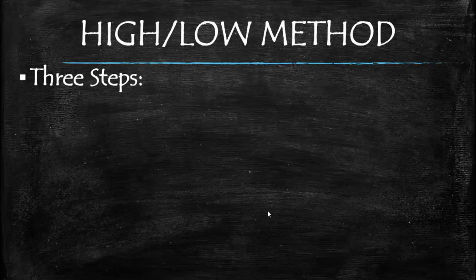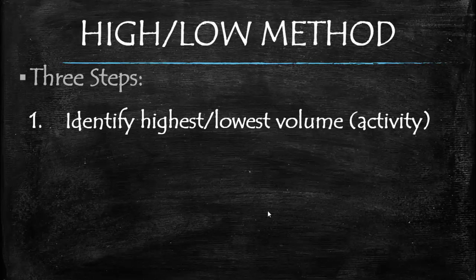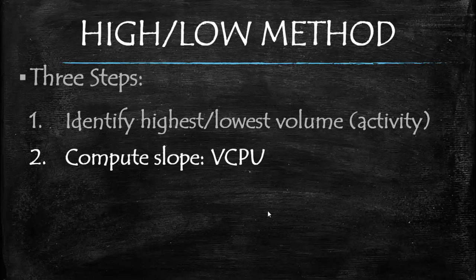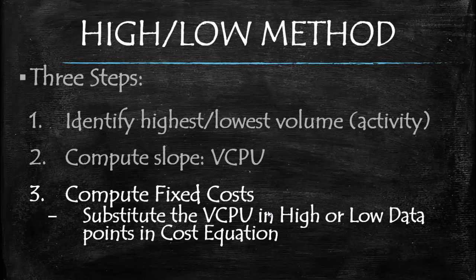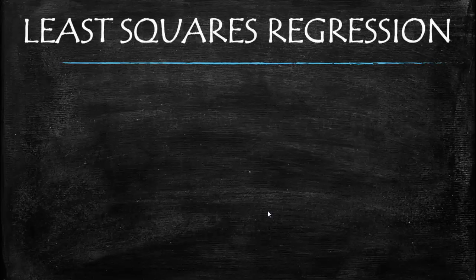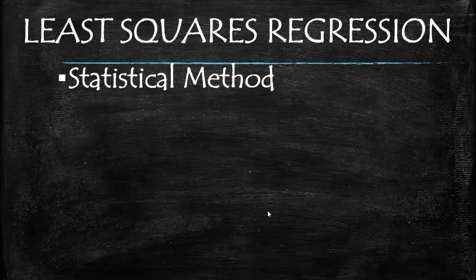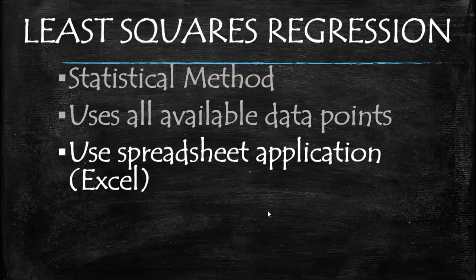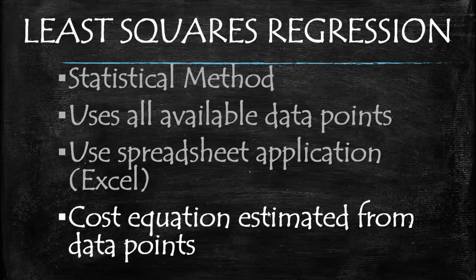The second method is the high-low method, which is based on two points: the highest and lowest. The first step is identifying the highest or lowest activity or volume of production. The second is to compute the variable cost per unit, which is similar to computing the slope of a line. The third is to substitute that variable cost per unit into the cost equation using the high or low data points. The third method is the least squares regression approach, a statistical method in which all data points are plotted using a spreadsheet application such as Excel to arrive at the cost equation. I will demonstrate each one of these using Excel in a subsequent segment.